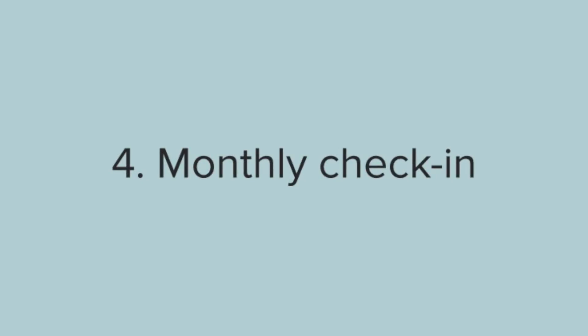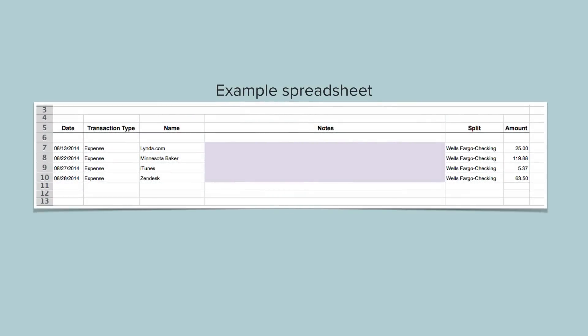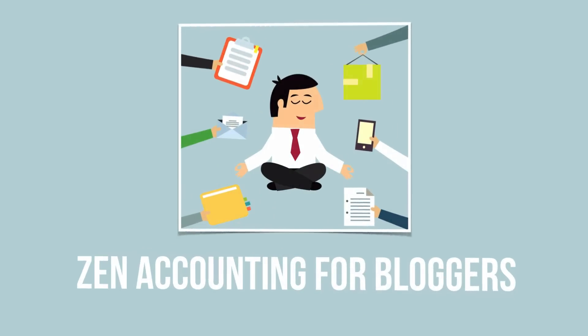Number four in the Zen accounting system for bloggers is the monthly check-in. The idea here is that your bookkeeper or accountant will send you an email with the things they didn't quite know how to categorize. Here's a screenshot from Food Blogger Pro of some different transactions — ones that came up that our bookkeeper didn't know what to do with, first-time charges they saw. We would put some information in the notes area and send it back saying here's how to categorize that. It's completely hands-off and really easy to do. All the other transactions she knows what to do with, so she can jump in and categorize those and only ask us about the ones she has questions on.